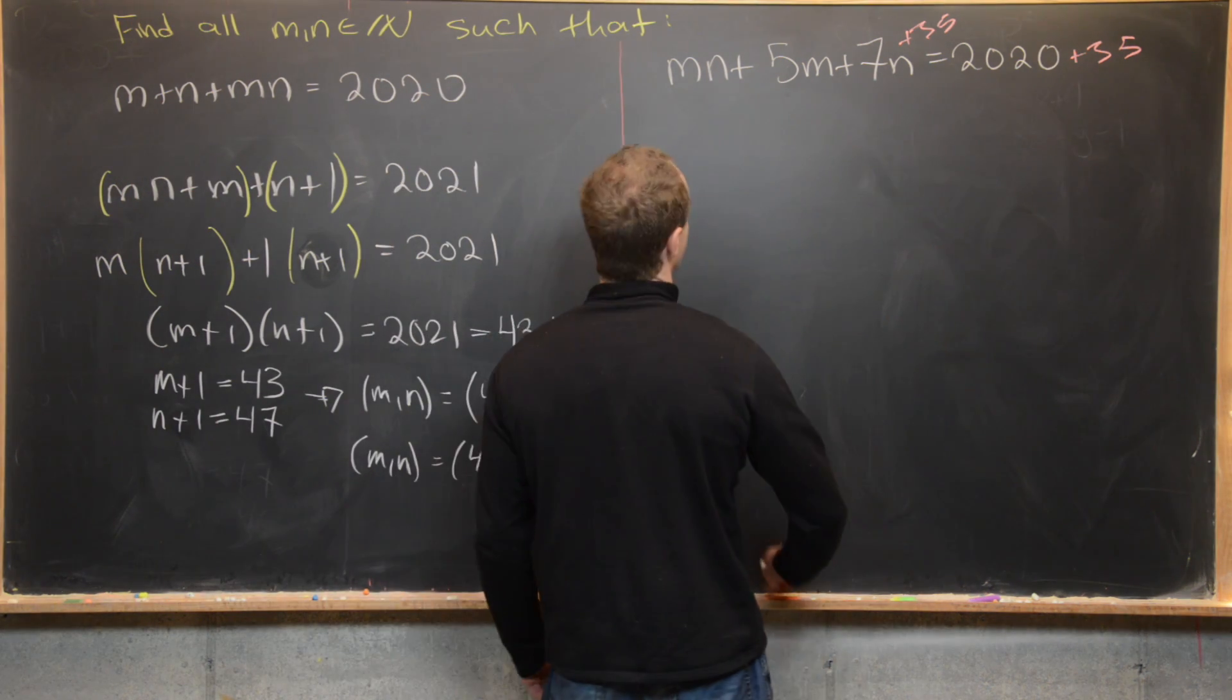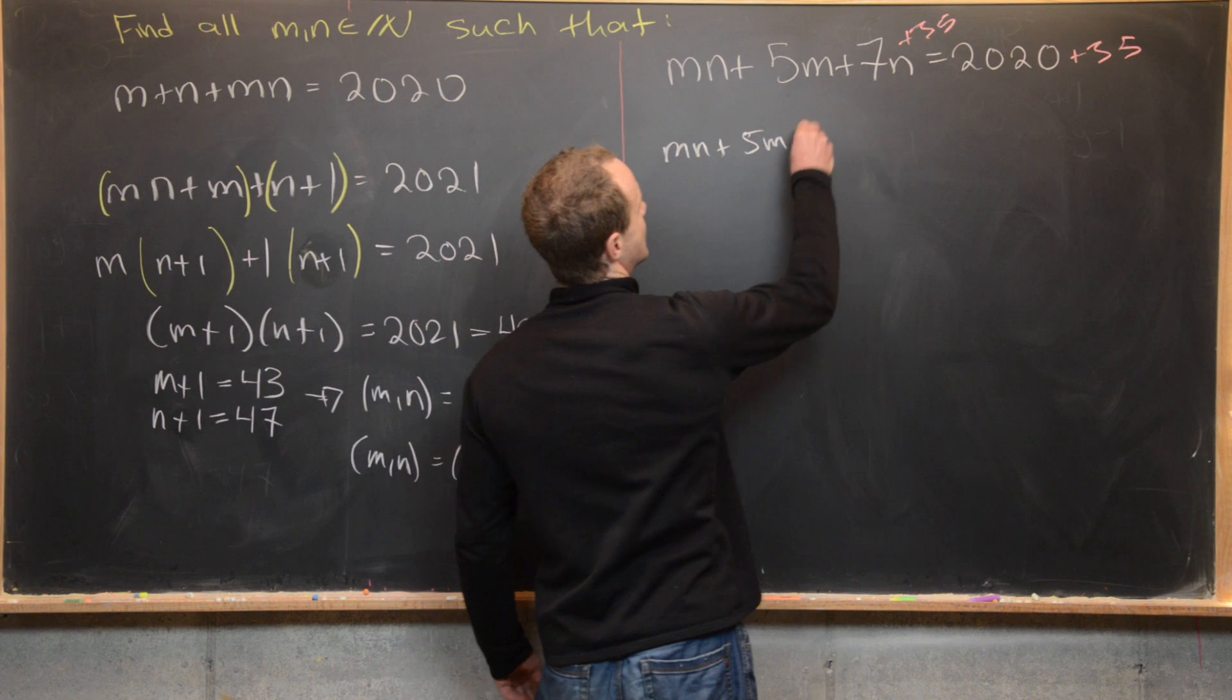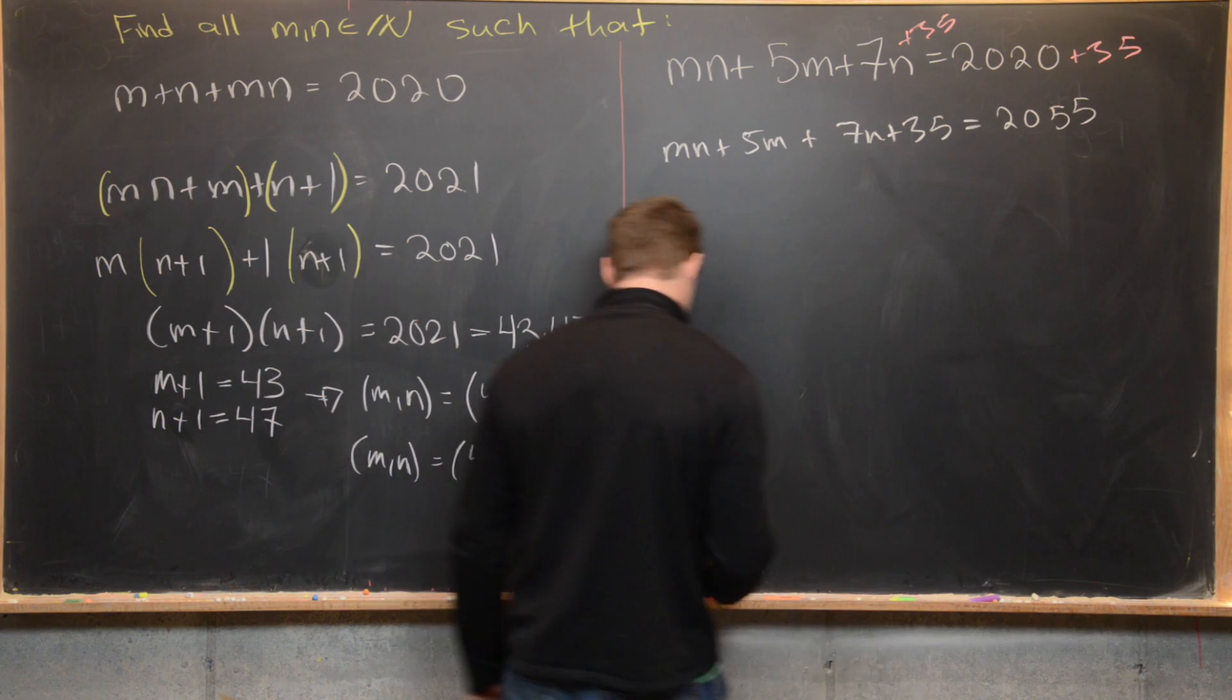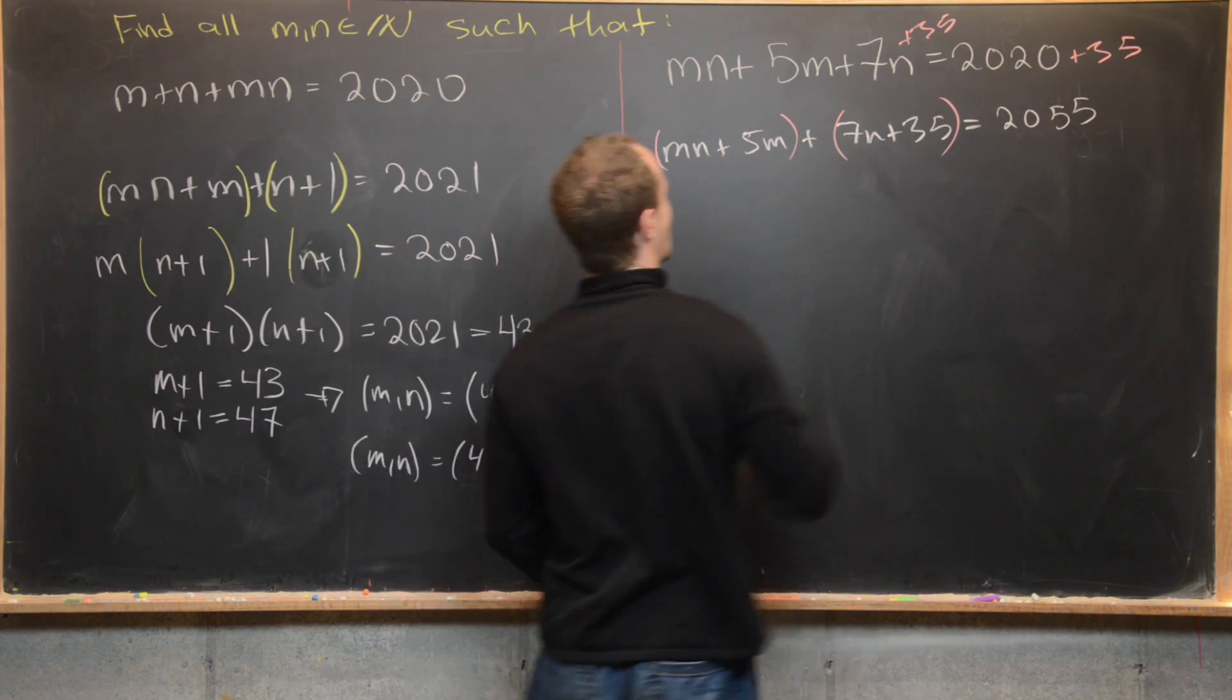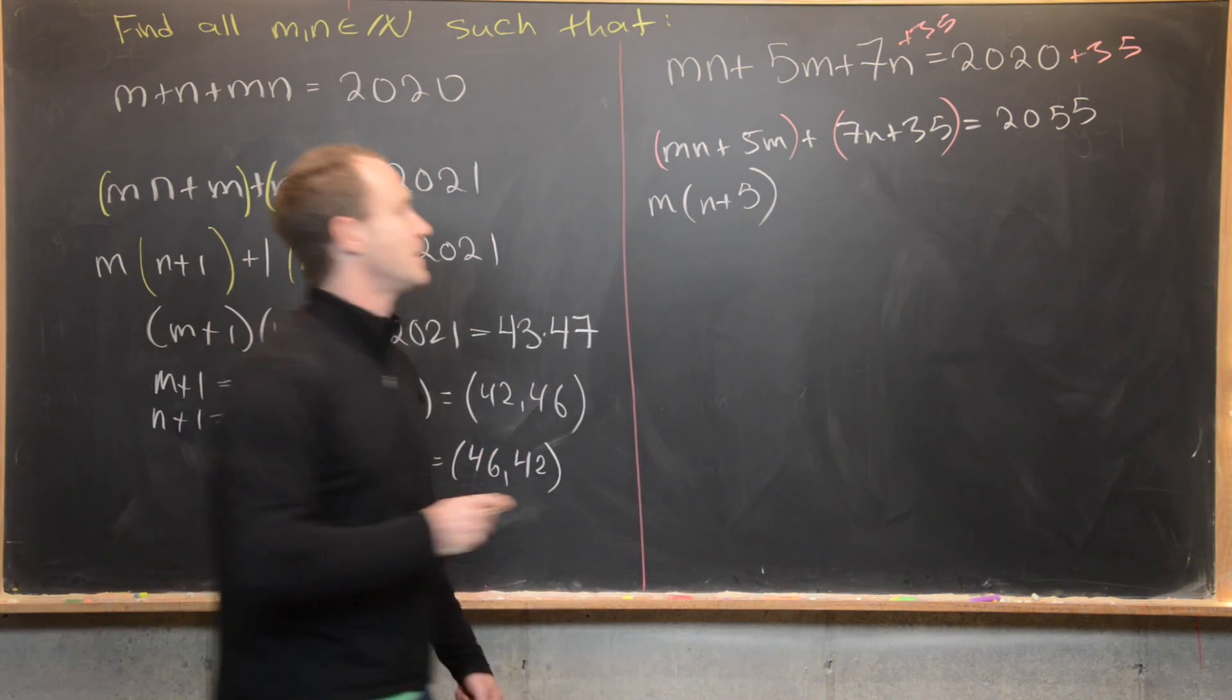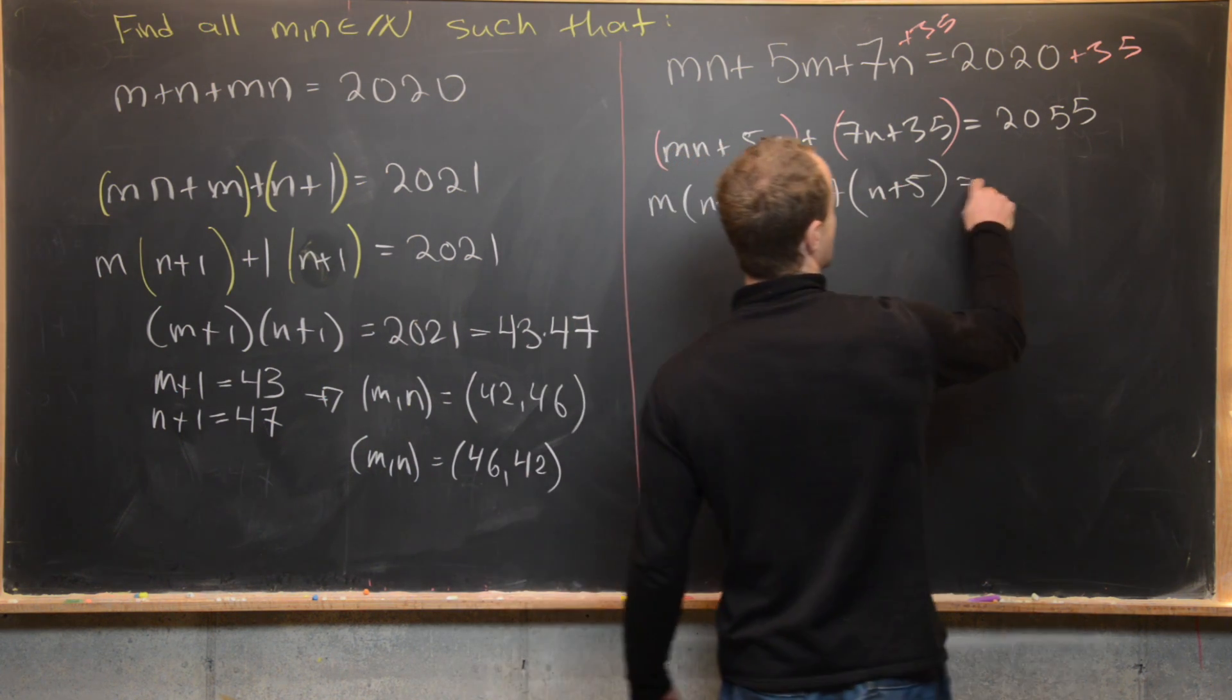But let's see how that allows the left hand side to be factored. So we can do some grouping. Well let's maybe bring this down first. We have mn plus 5m plus 7n plus 35 equals 2,055. Now I can group my first two terms and my last two terms. Factor an m out of my first two terms. That leaves me with n plus 5. I can factor a 7 out of my last two terms. That also leaves me with n plus 5.